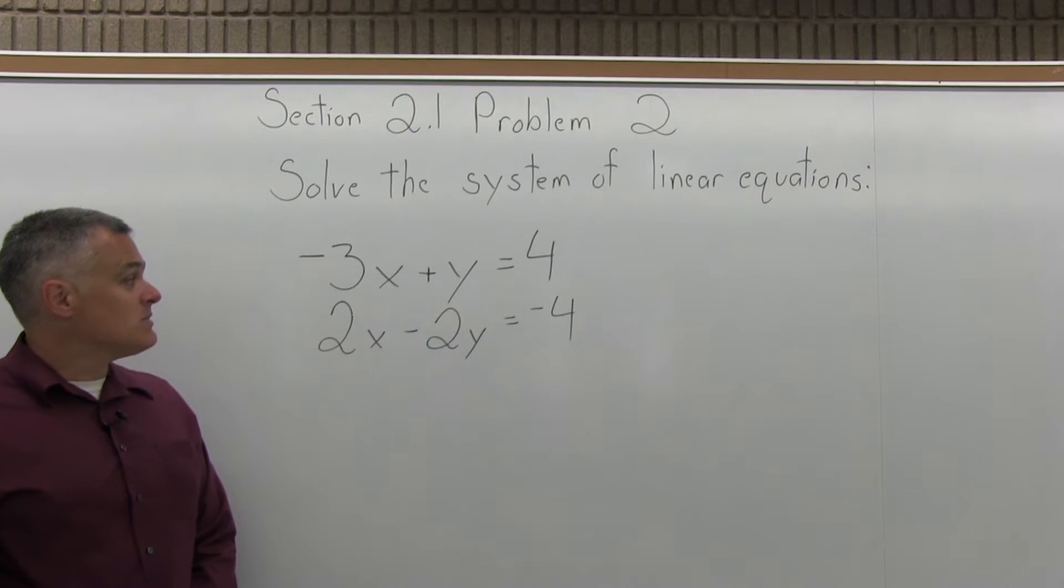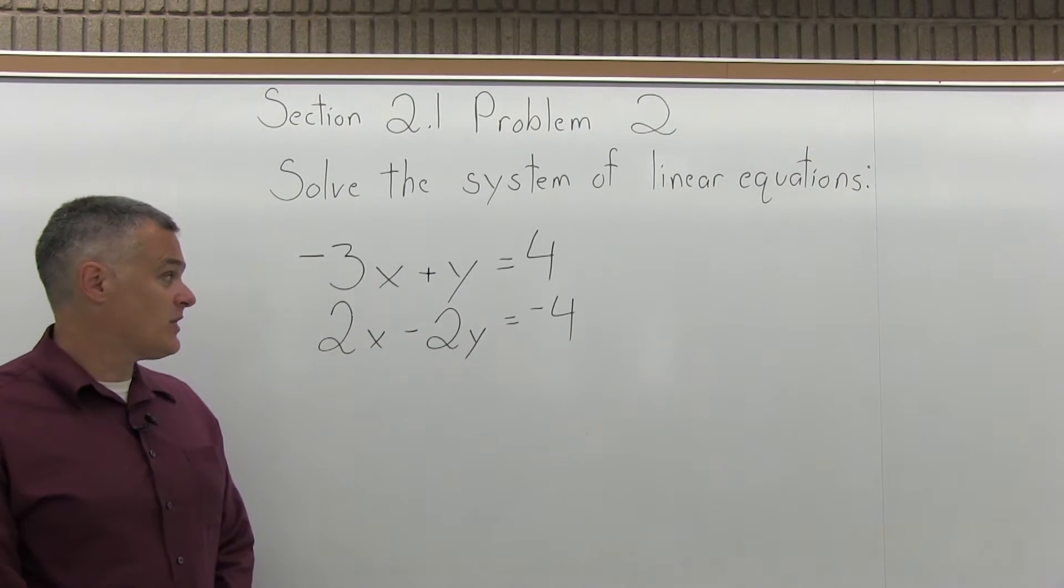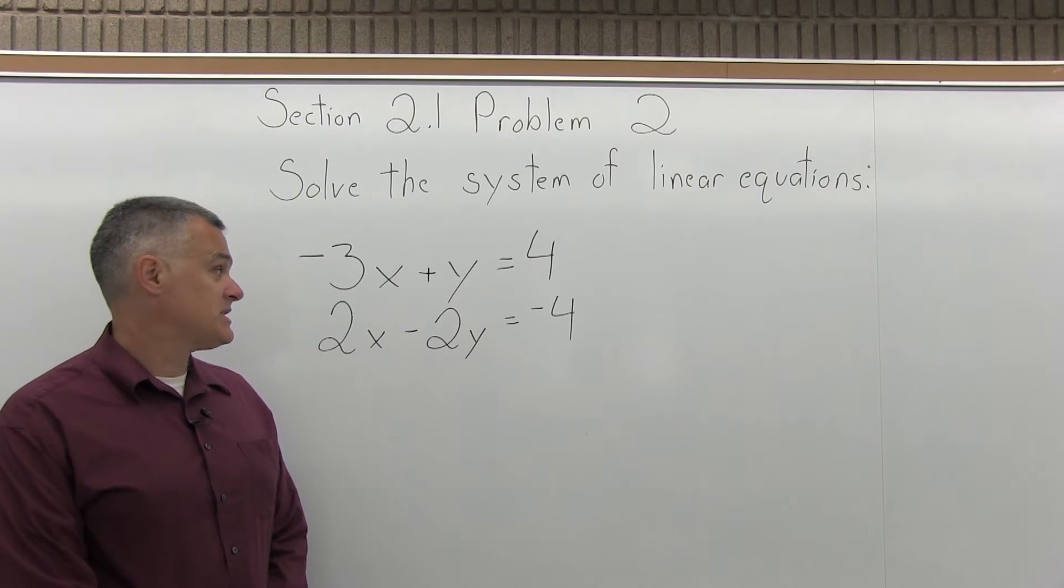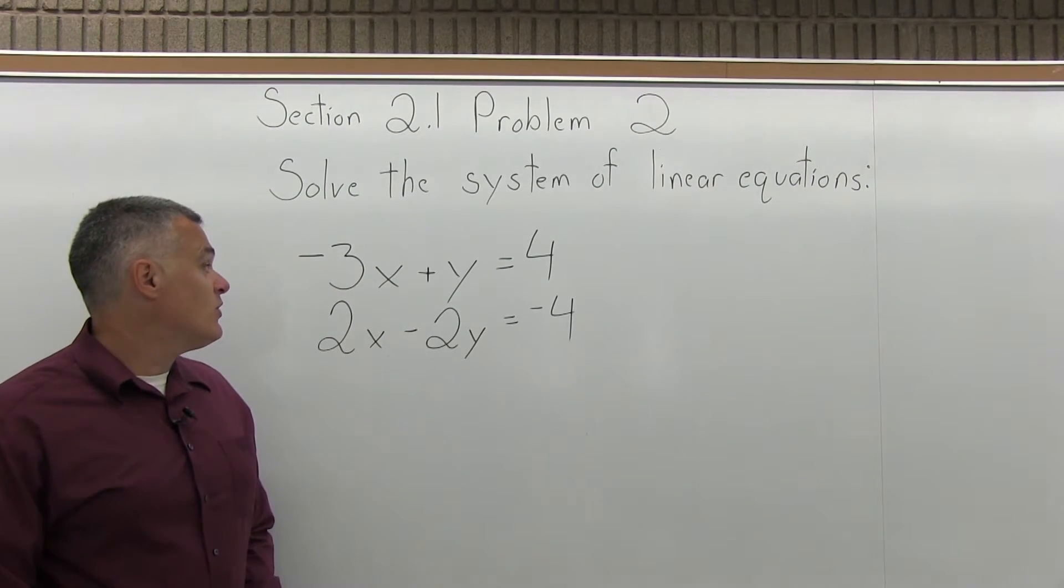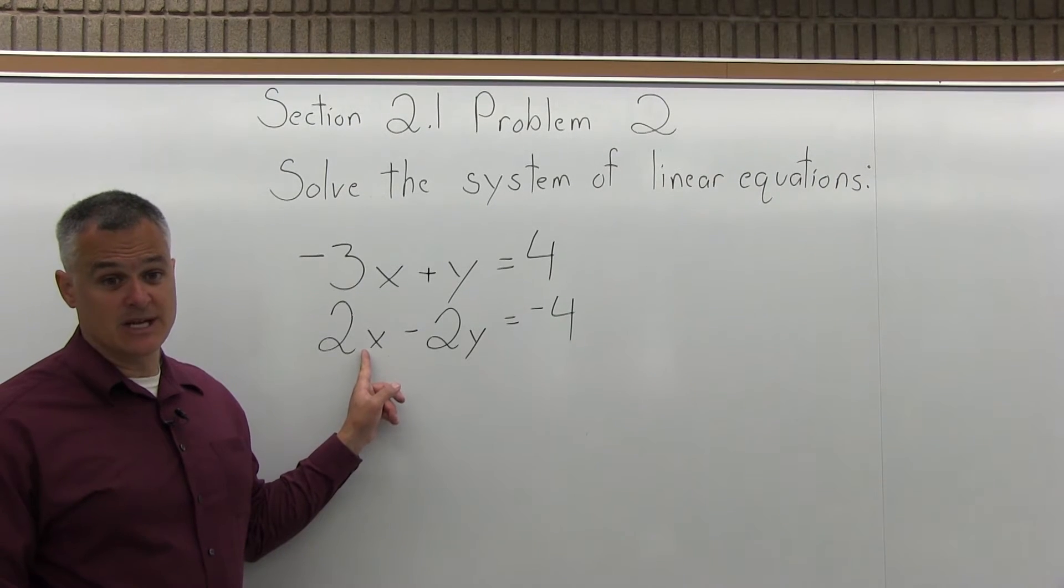So step one is multiply one or both equations times some value so that one of the variables will have the same number in front but with opposite signs. So if I cancel the x's, I could go with 6x and negative 6x, that would work.